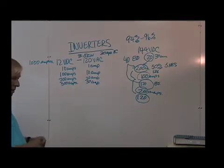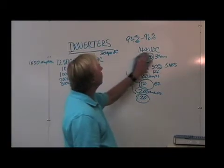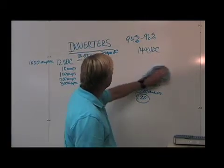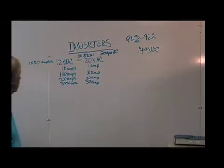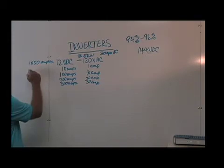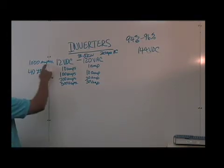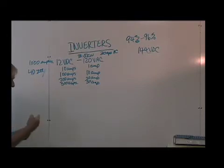But let's look at the comparable case at 144. Let's say, for instance, you saw how it worked out with the 4D 200-amp-hour battery. Let's see how it works out with the same 4D 200-amp-hour battery at 144 DC.